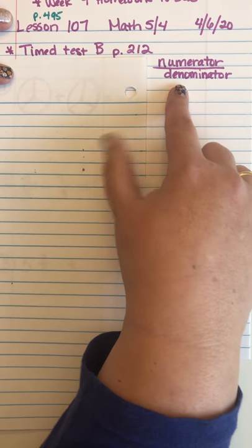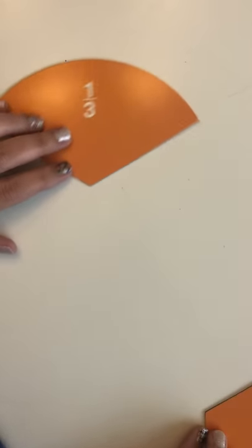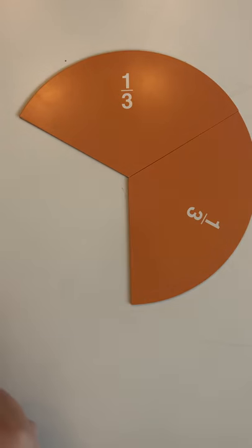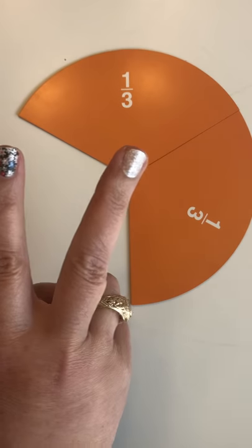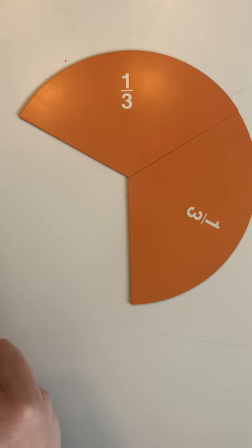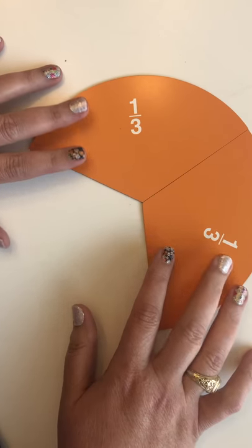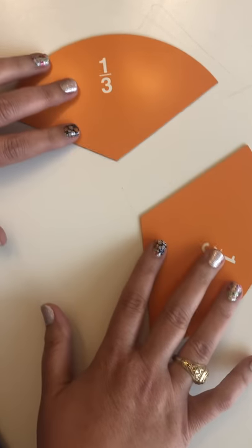Don't let common denominator be a scary term. So let's look at some examples with our fraction pieces. I have one-third as my fraction piece here, and if I add one more third — one-third plus one-third equals two-thirds. This is one way to look at it using the fraction pieces.